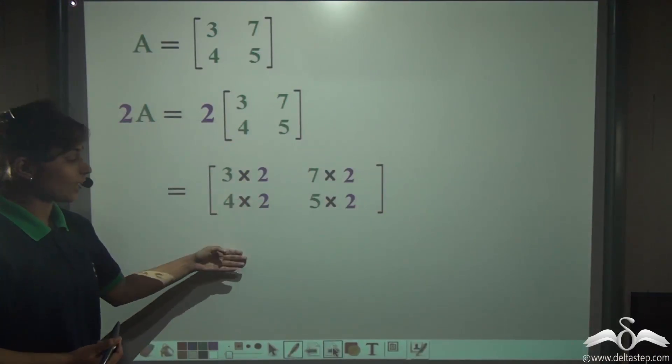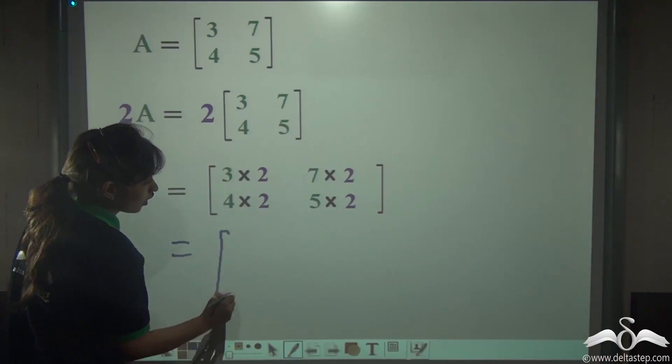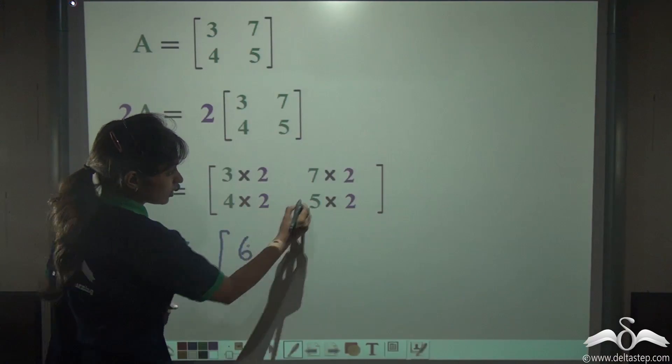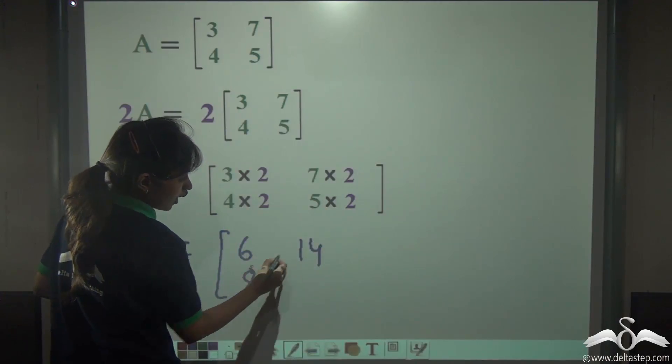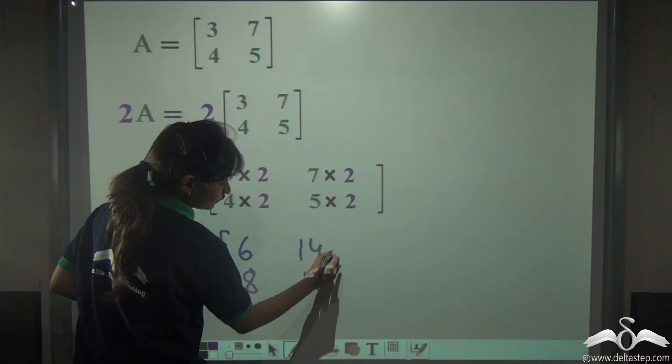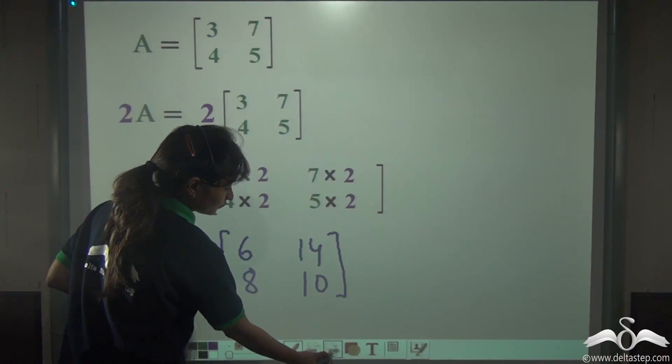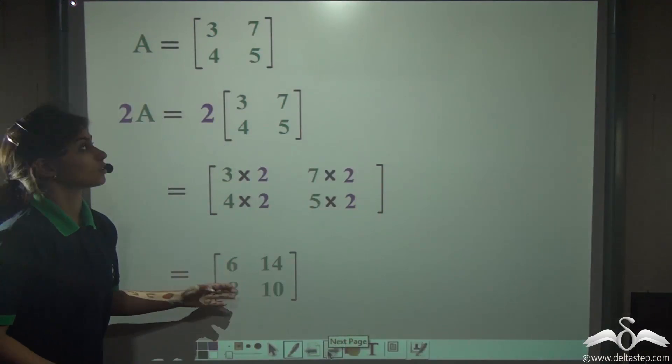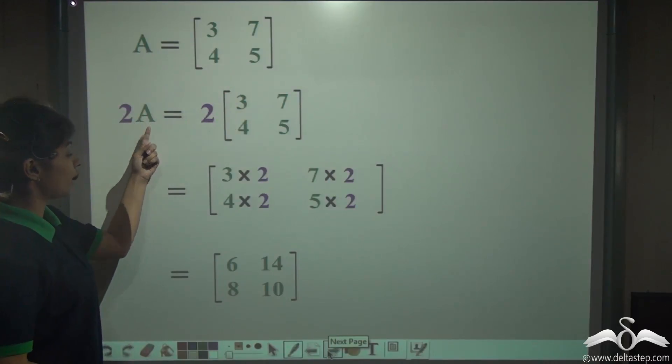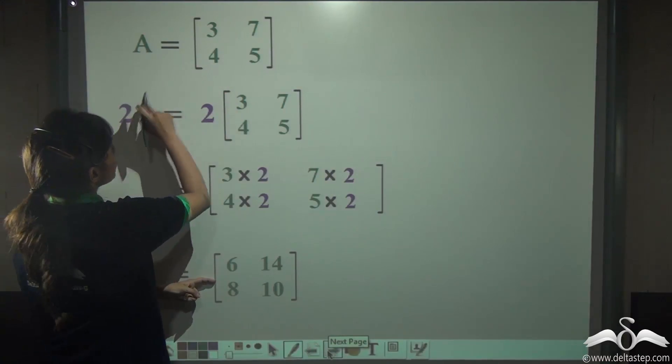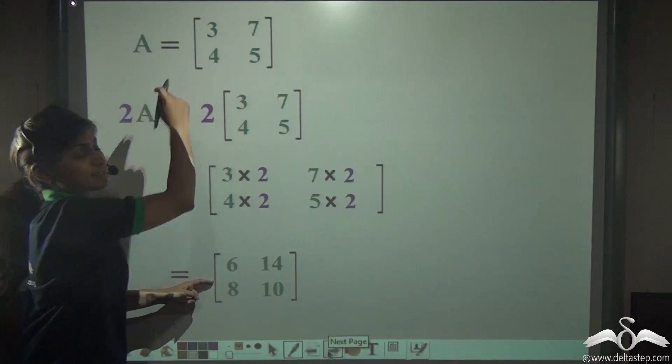Simply multiply the answer and write 3 into 2 is 6, 7 into 2 is 14, 4 into 2 is 8, and 5 into 2 is 10. So this is your answer. If there is a matrix A with these elements, 2A will be 2 into all the elements present inside the matrix.